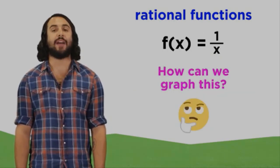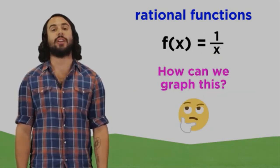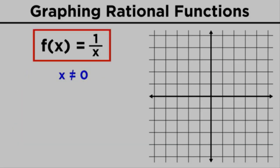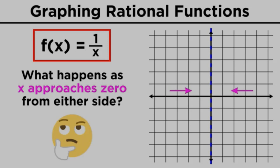Let's learn how to graph these kinds of functions, starting with the simplest, one over x. Immediately, we know that x can't equal zero, so zero is not part of the domain of this function. But what happens on either side of x equals zero? Well, let's plug in some numbers.